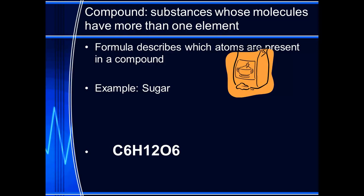We use formulas to describe the different elements within certain compounds. For example, sugar is C, which is carbon, six carbons. H, we have 12 of those. So we have C6H12O6.